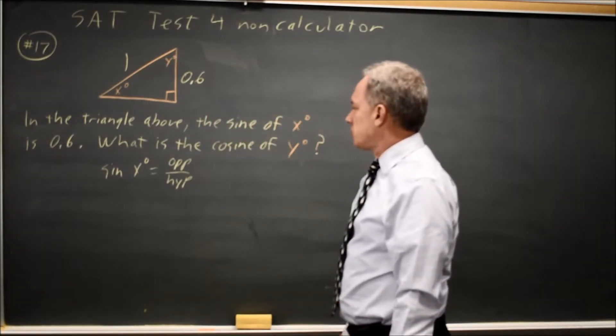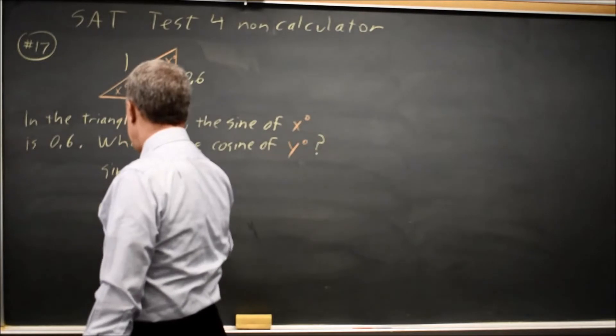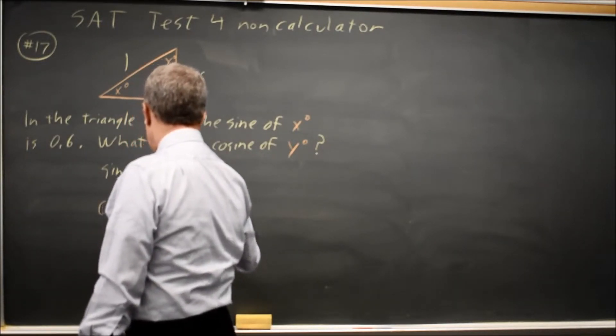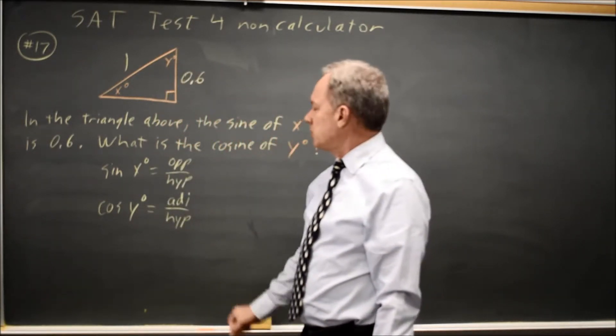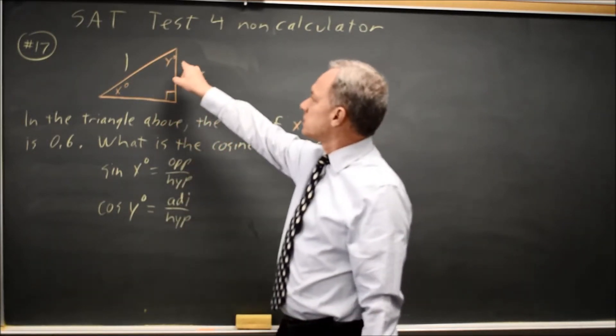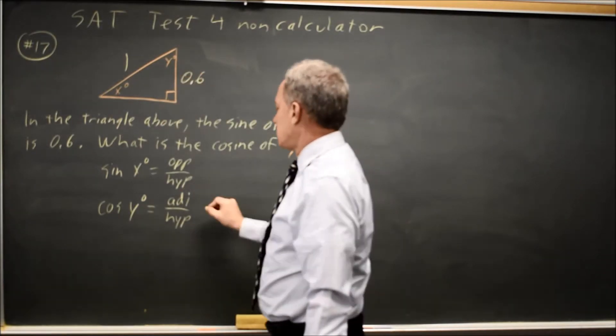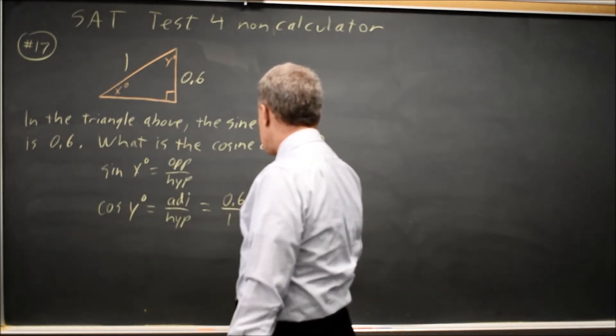And they're asking for the cosine of y. Cosine of y is the adjacent side over the hypotenuse, where the hypotenuse is again the side opposite the right angle. And by adjacent, I mean the side adjacent to, or touching, angle y. So this will be 0.6 over 1, which is 0.6.